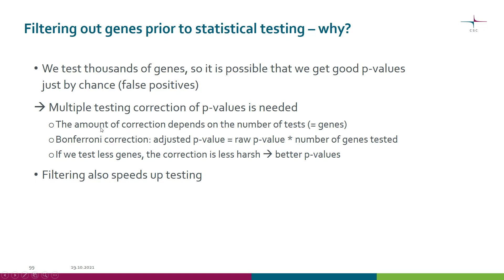The CERA package, and therefore Chipster, uses the Bonferroni correction, which is a quite harsh correction method. It takes the raw p-value and multiplies it by the number of genes tested. So it is in our interest to keep this number small. In addition, filtering also speeds up testing.